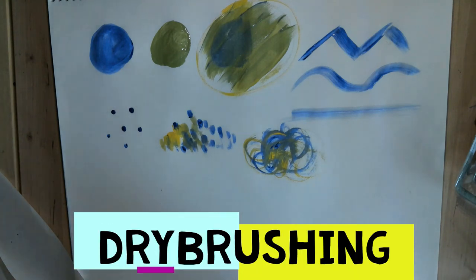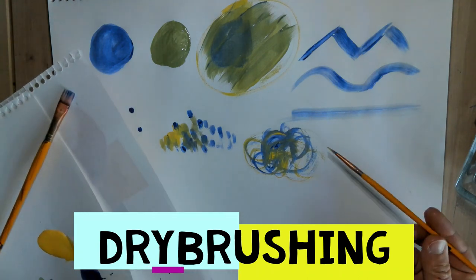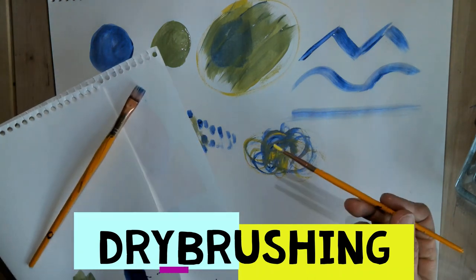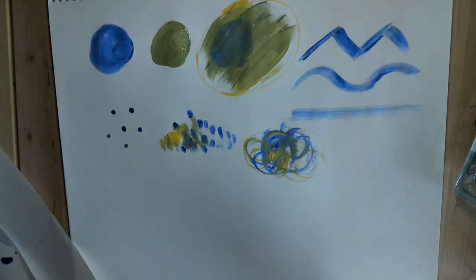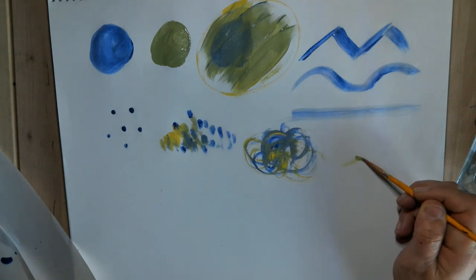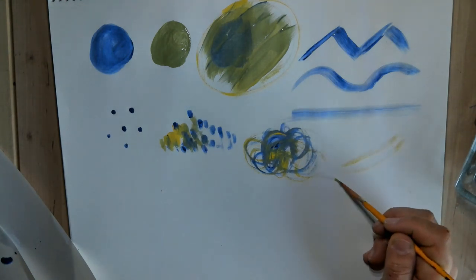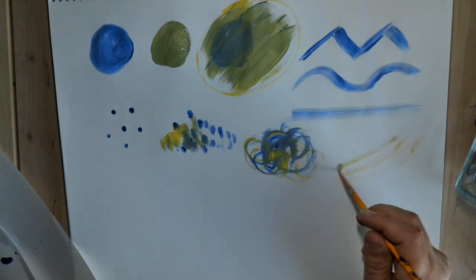Dry brushing is an interesting technique where you have very very little paint on your brush. So if you had a big dab of paint, you would brush some of it off onto your palette or onto another working space, and then you just use gentle strokes. And it creates this kind of scruffy texture.